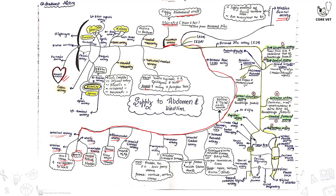The cranial gluteal arteries pass through the greater sciatic foramen and supply the muscles of the hip. Next is the urogenital artery, which supplies the genital organs — in males it supplies the bladder, vas deferens, seminal vesicles, and pelvic part of the urethra; in females it supplies the vestibule, urethra, and uterus. The obturator artery supplies the obturator internus and externus muscles.